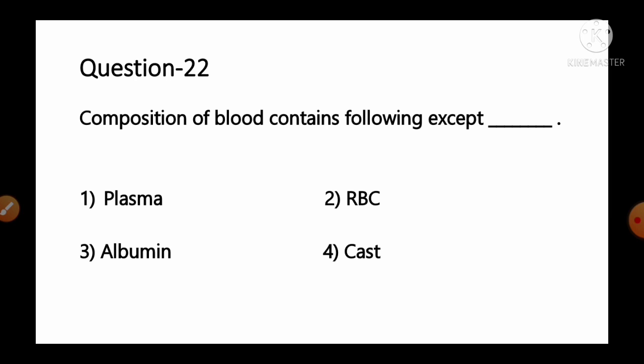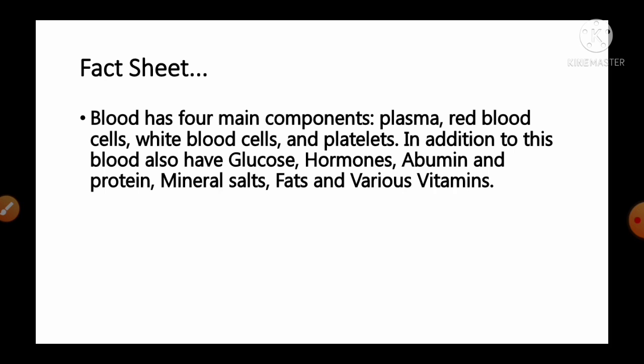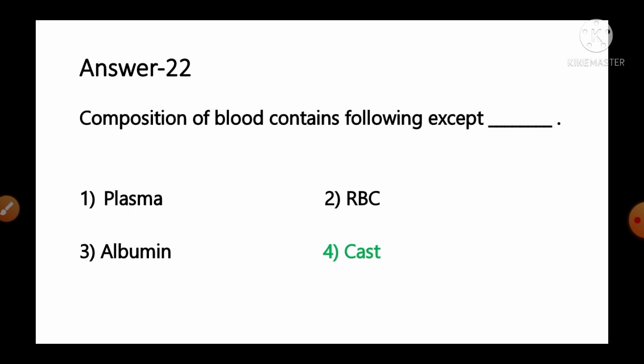Question number 22: Composition of blood contains the following except — options: 1) plasma, 2) RBCs, 3) albumin, 4) cast. Blood has 4 main components: plasma, red blood cells, white blood cells and platelets. It also contains glucose, hormones, albumin, proteins, mineral salts, fats and vitamins. Cast is not a component of blood. So option number 4, cast, is the correct answer.